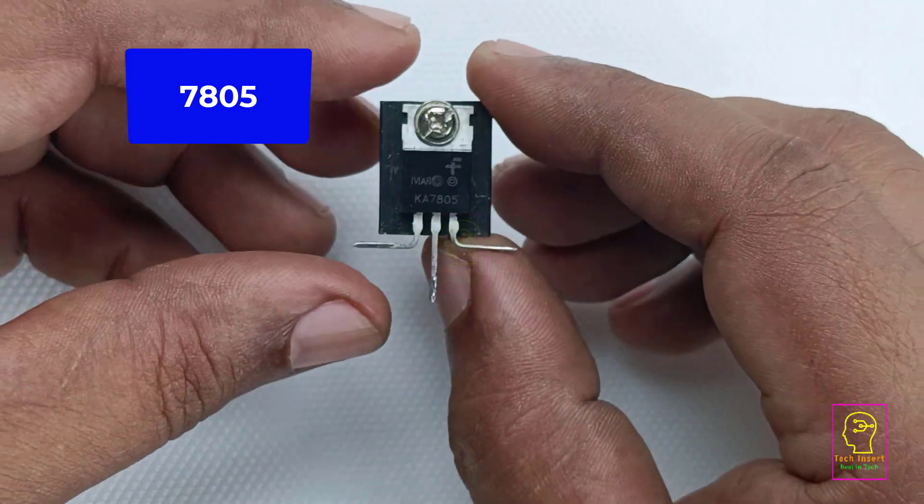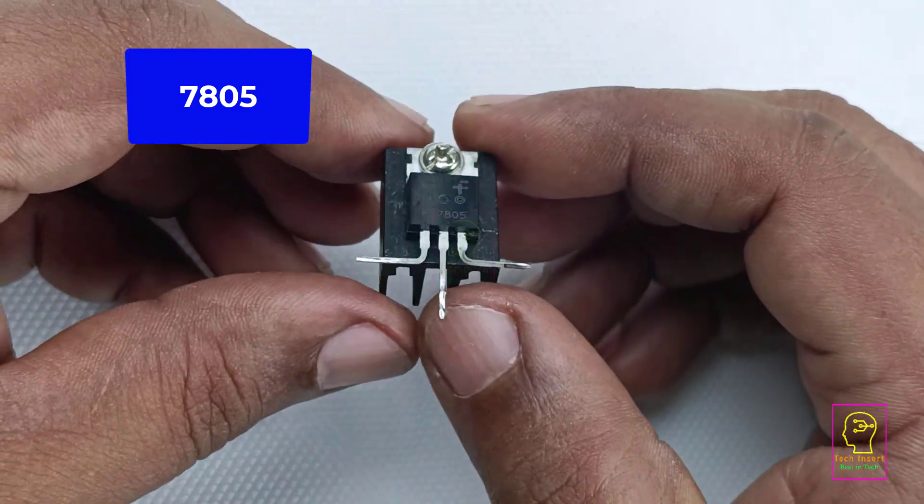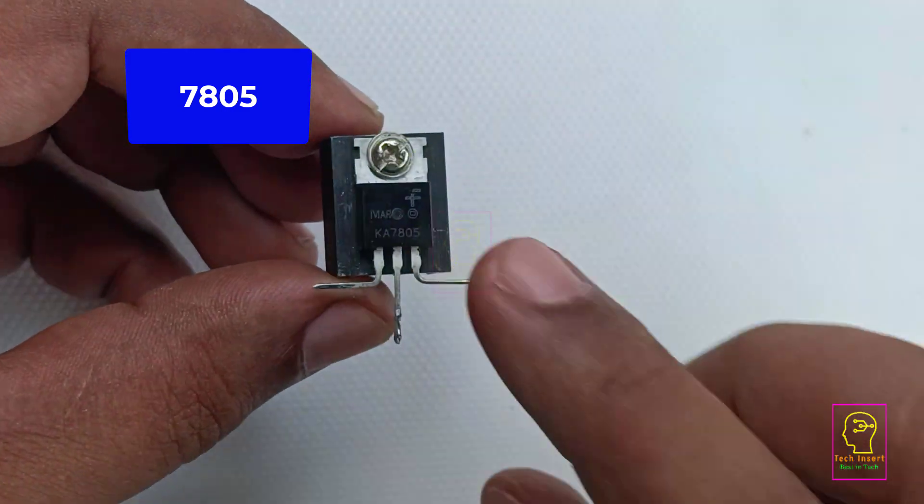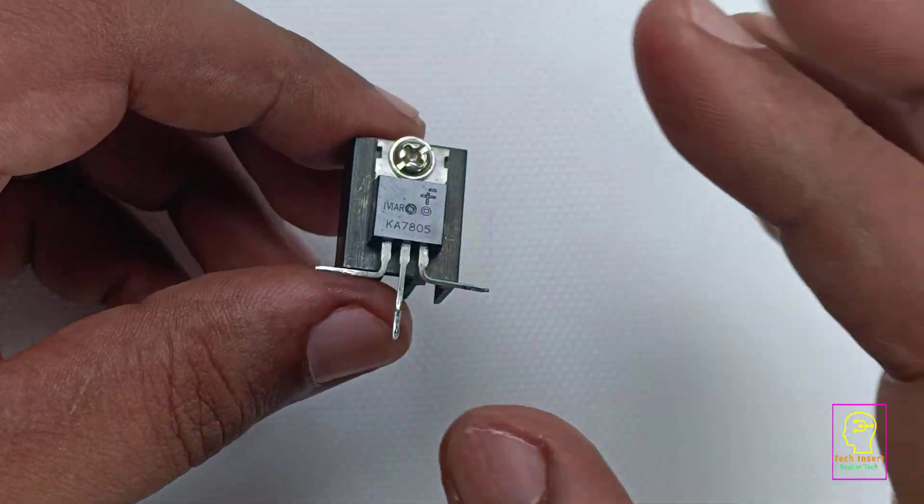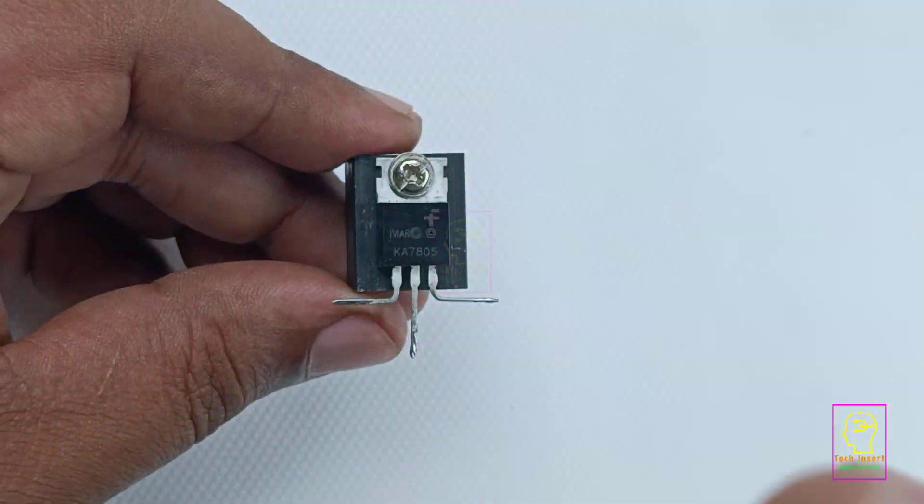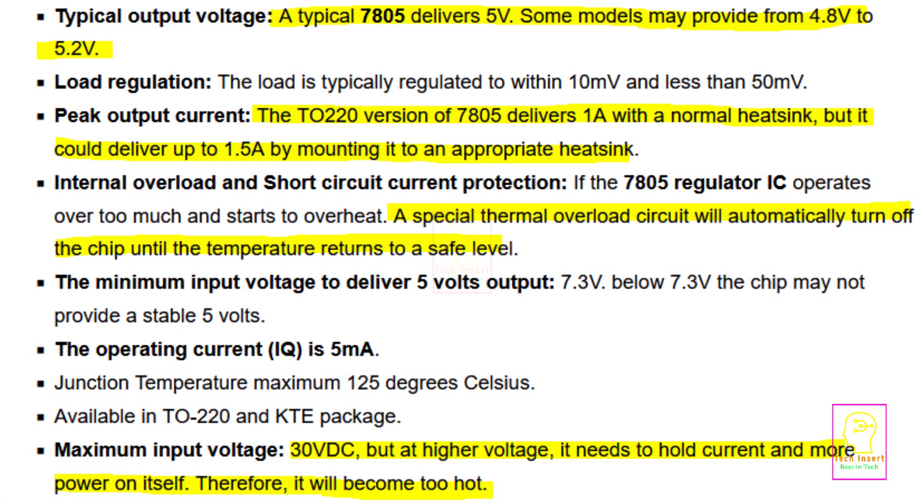This is 7805, which is a positive 5 volt regulator. I will give you the detailed properties of this regulator chip. We are implementing the hack in this chip. All the bullet marked points are valuable, but I have highlighted some which you must read.